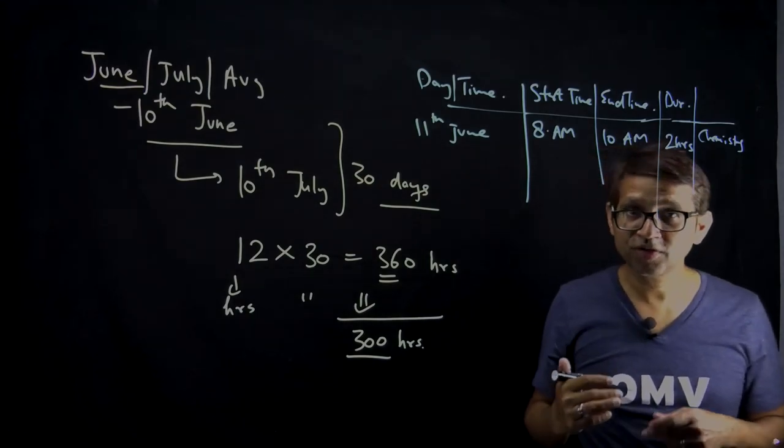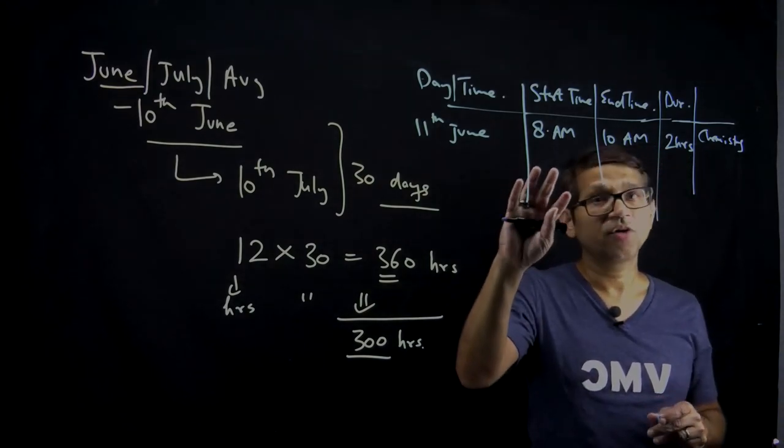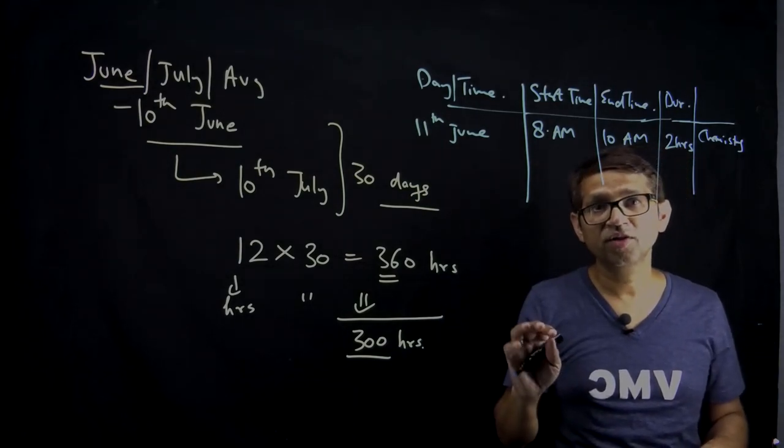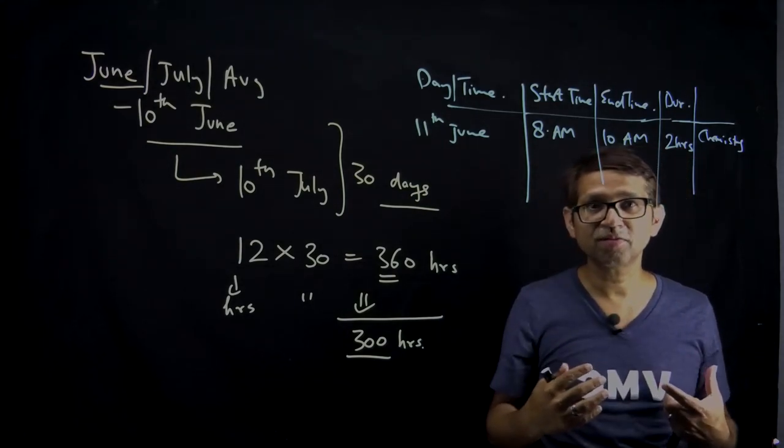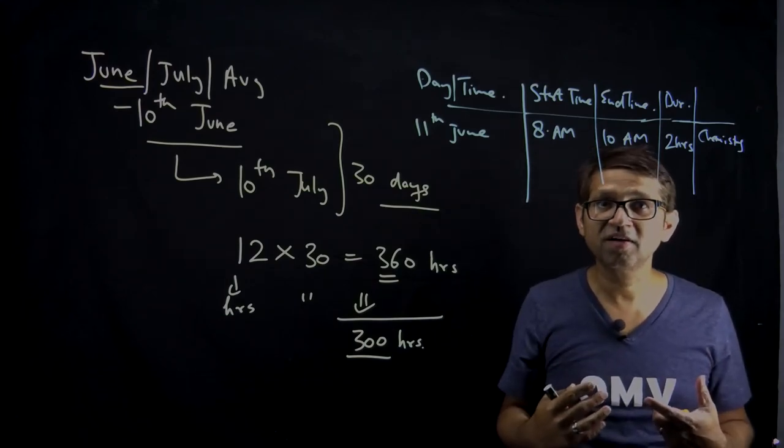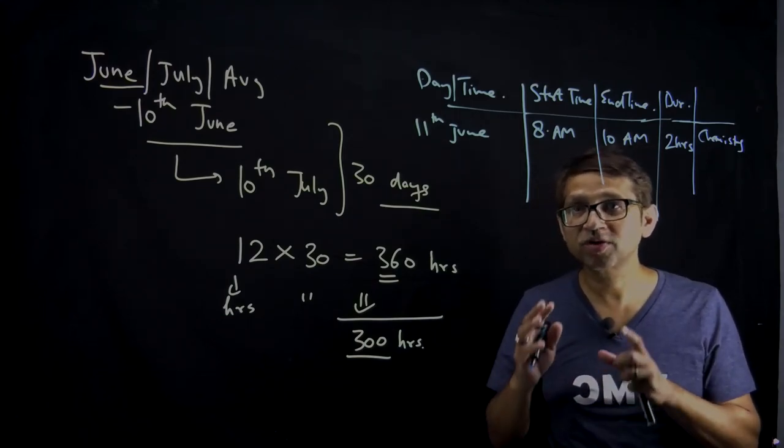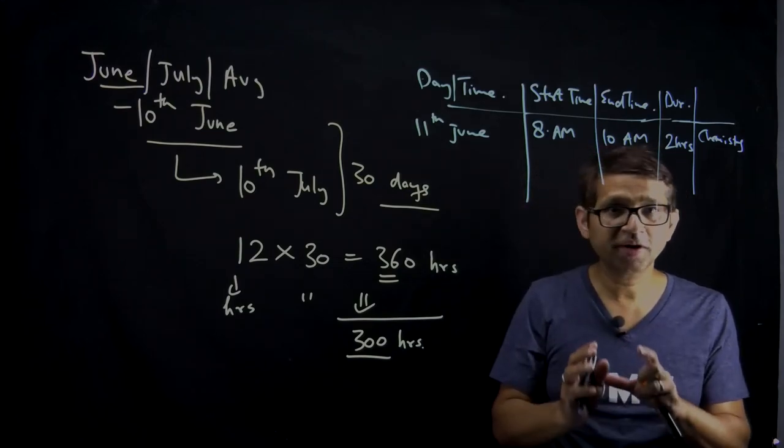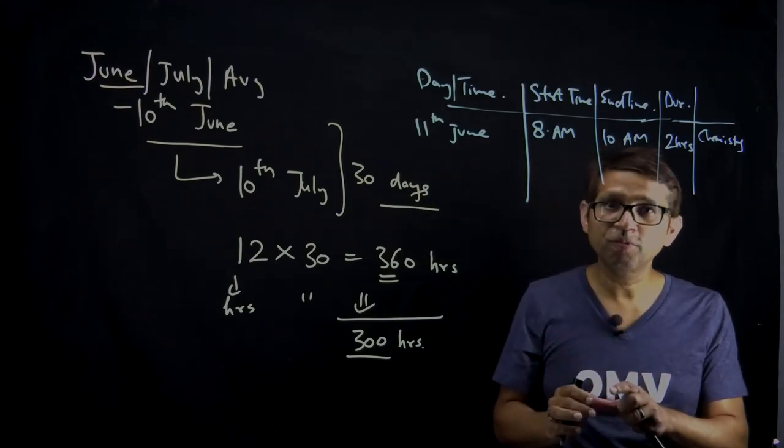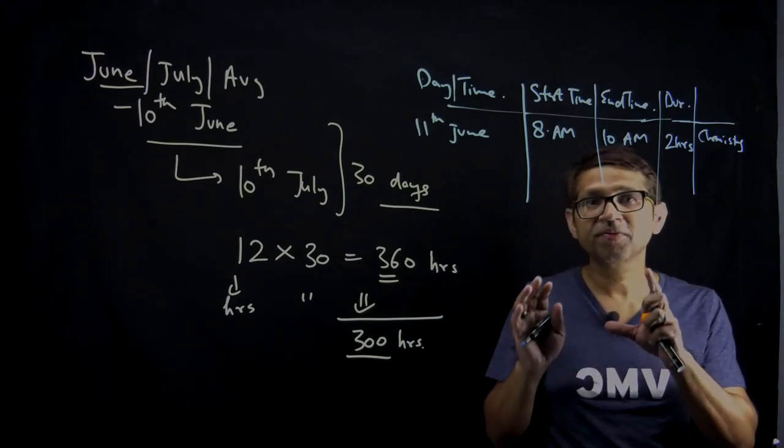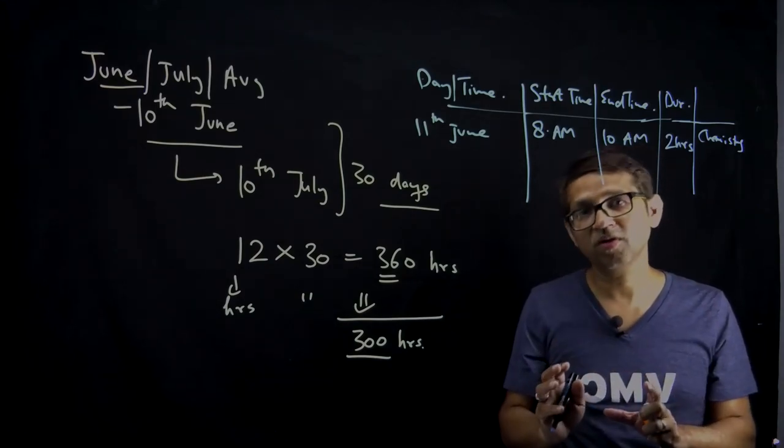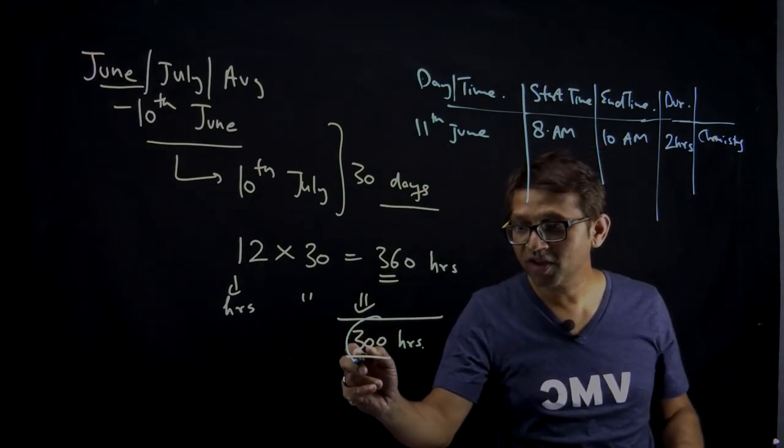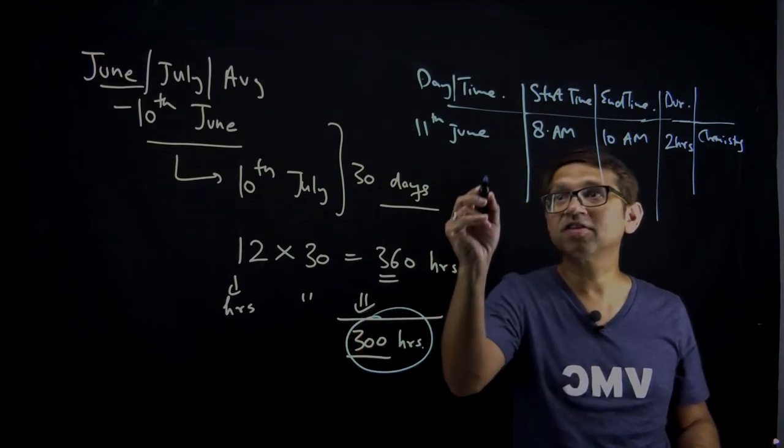Use this format. You can have this format in whatever device—maybe paper, diary, computer, phone. Make a quick table and keep filling it. Lock it, and then you can see how much away you are from your goal. If your target is 300 hours, track your progress.